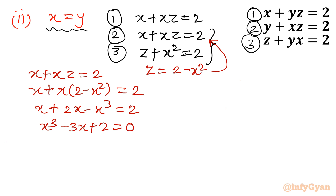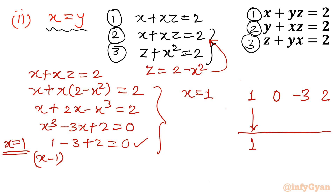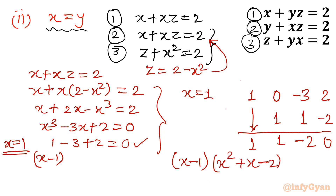I can see x equal to 1 is a straightforward solution: 1 minus 3 plus 2 equals 0, so x minus 1 is a factor. Using synthetic division with root x equal to 1 and coefficients 1, 0, minus 3, 2 — the factorization becomes x minus 1 times x squared plus x minus 2 equal to 0.